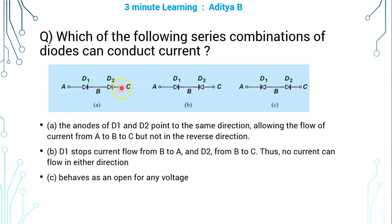A series combination of diodes conducts only when the anodes of all series diodes are facing in the same direction and the cathodes of all series diodes are facing in the same direction — as in Figure A, where current can conduct from A to C. The orientation of diodes is not the same in Figures B and C, and hence those series combinations do not conduct.